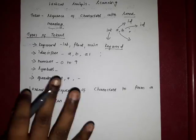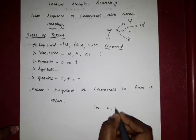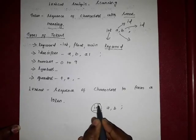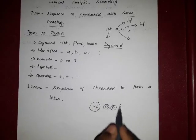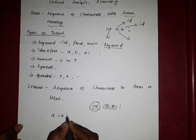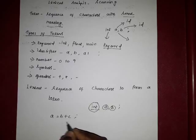A lexeme is the sequence of characters that form a token. Take the example 'integer a, b'. Here 'int' is one lexeme, 'A' is one lexeme, the comma is one lexeme, 'B' is one lexeme, and the semicolon is one lexeme. Similarly, for 'a = b + c': 'A' is one lexeme, the equals sign is one lexeme, 'B' is one lexeme, 'plus' is one lexeme, 'C' is one lexeme, and the semicolon is one lexeme.